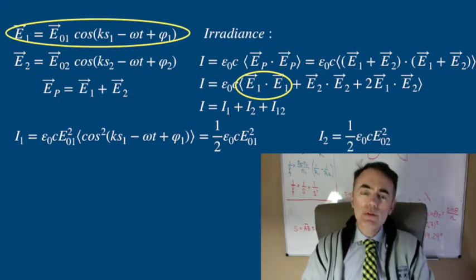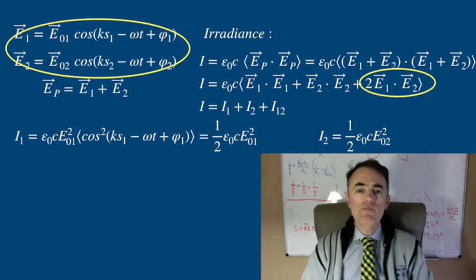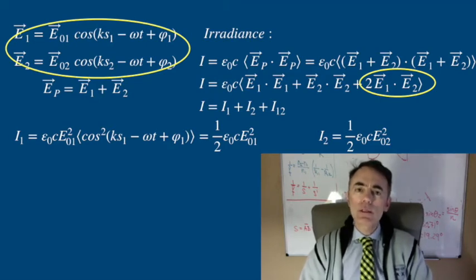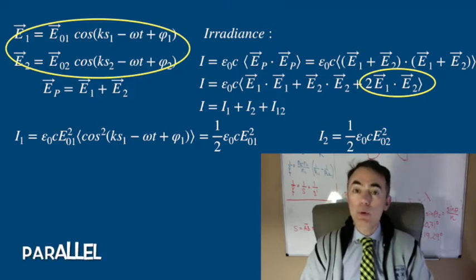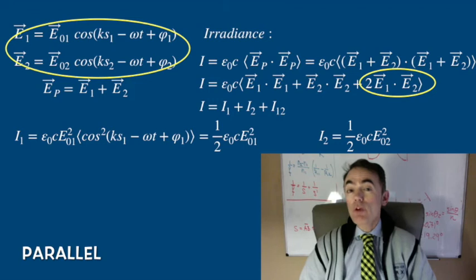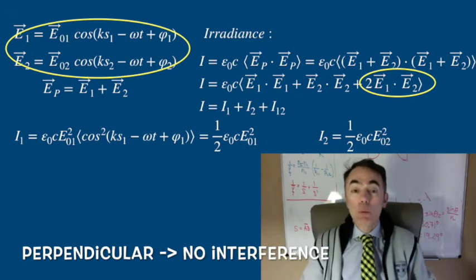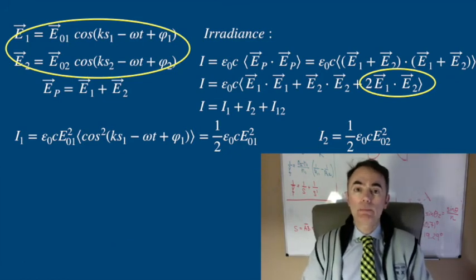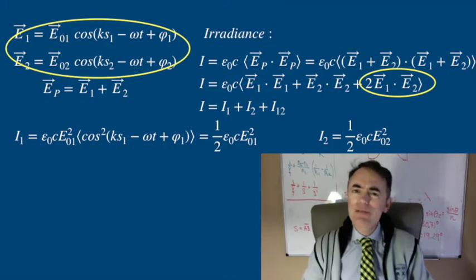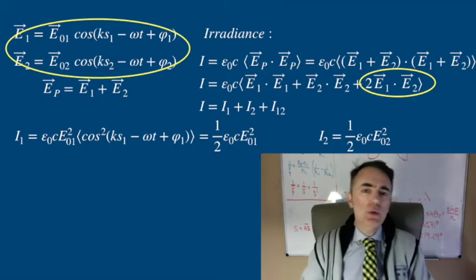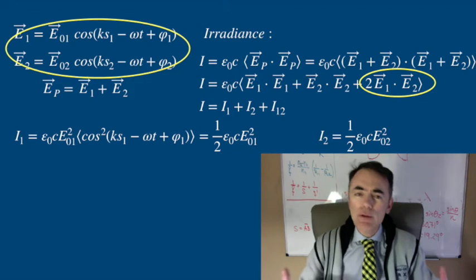The interference term is the dot product of both electric fields. Because it is a dot product, its result depends on the angle between both fields. If they are parallel, we can have maximum constructive interference or maximum destructive interference. If they are perpendicular, there will be no interference in that case. This can already give you some ideas of how important polarization is and how interesting phenomena you can get from it.